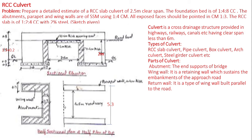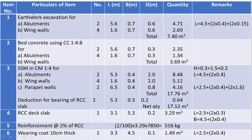The six estimate items are: (1) earthwork excavation for abutments and wing walls, (2) bed concrete using CC 1:4:8 for abutments and wing walls, (3) size stone masonry in cement mortar 1:4 for abutments, wing walls, and parapet walls, (4) RCC deck slab, (5) reinforcement for deck slab, and (6) wearing coat above the deck slab. The detailed estimate table format is the same as that of a building estimate, with columns for item number, particulars, number, length, breadth, depth or height, quantity, and remarks.